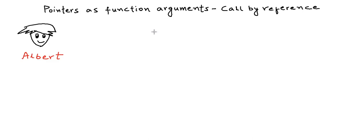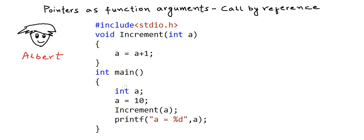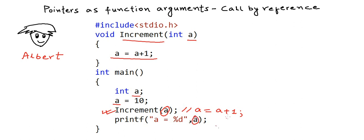Albert is a beginner programmer who has recently learned about user-defined functions and tries to apply this concept. He writes a simple C program where he has an integer variable declared and initialized in the main method, and he wants to increment its value by one. Instead of writing something like a++ or a = a + 1, he writes a function increment that takes an integer a as argument and performs a = a + 1, then calls it from main passing a, and prints the value. He expects the output to be a = 11.